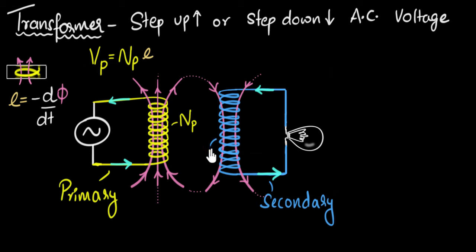All right. If the number of turns in the secondary is, let's call that as NS, where S stands for secondary, then the voltage in the secondary is going to be, well, one coil has EMF E, NS number of coils will have NS times E. Notice the voltages in the secondary and primary are not the same. If I divide them, we'll get the relationship between them. We get VS divided by VP equals NS divided by NP.